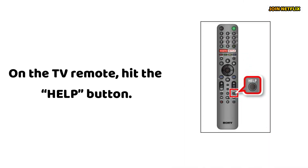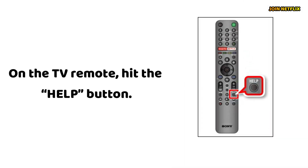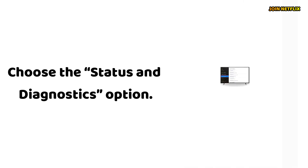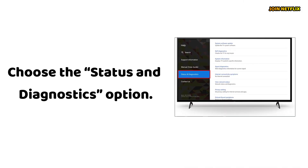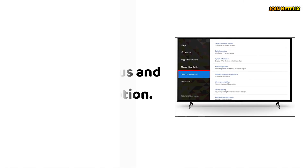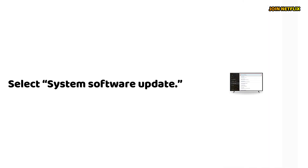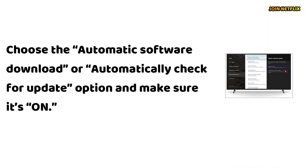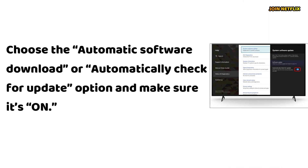On the TV remote, hit the Help button. Choose the Status and Diagnostics option. Select System Software Update. Choose the Automatic Software Download or Automatically check for Update option and make sure it's on.